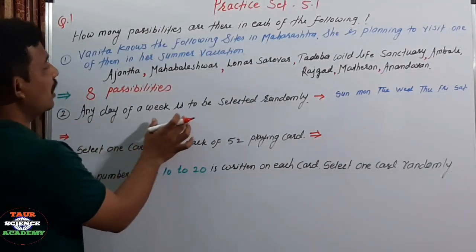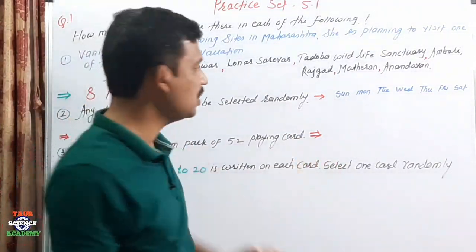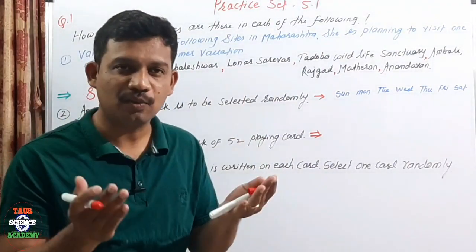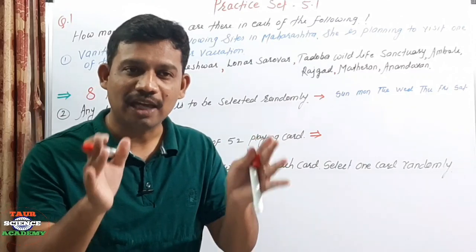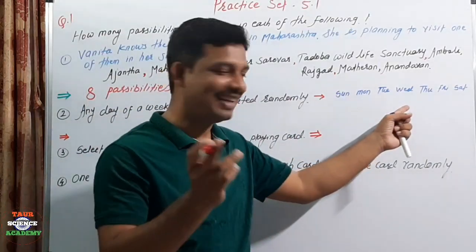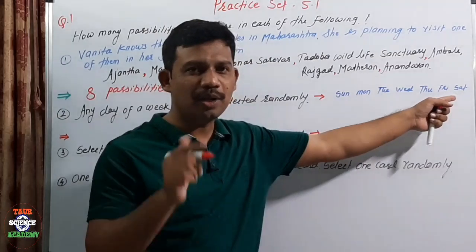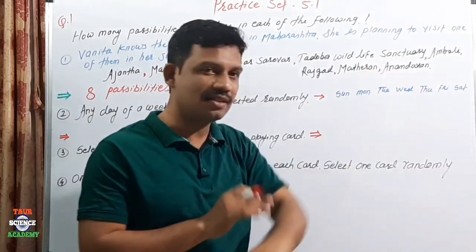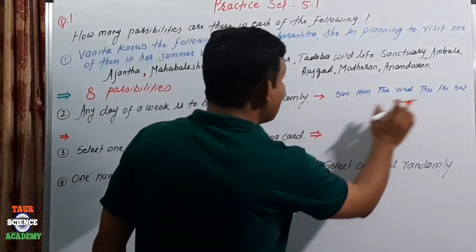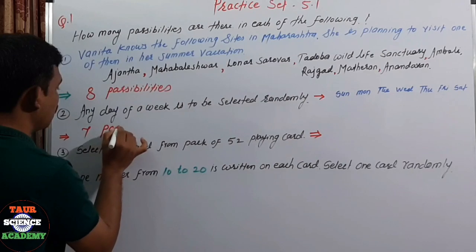Second question: Any day of a week is to be selected randomly. We need to randomly select any one day from the week. The days are Sunday, Monday, Tuesday, Wednesday, Thursday, Friday, Saturday. We know there are 7 days in a week. So if we want to choose one day, there are 7 possibilities.